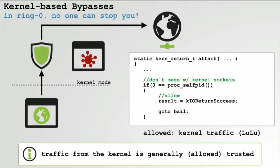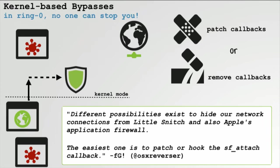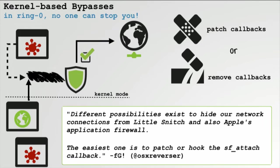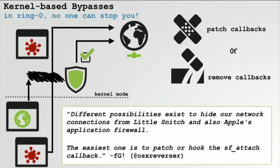The final way to bypass firewalls involves getting code into the kernel. If an attacker is able to get code running in the kernel, it's completely game over for the firewalls. First, a lot of firewalls will generically allow traffic originating from the kernel. Secondarily, if malicious code is running in the kernel, it can actually unregister or unhook any installed socket filter driver. This will transparently disable the firewall, and then the attacker's code — even from user mode — can connect out without having to worry about the firewall.